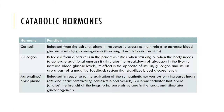Some of the catabolic hormones are shown here: cortisol, glucagon, adrenaline, and epinephrine. Cortisol is released from the adrenal gland mostly in times of stress, and its main role is to increase blood glucose levels by breaking down fats and proteins. Glucagon is released from the alpha cells in the pancreas when the body needs to generate additional energy, and it stimulates the breakdown of glycogen in the liver to increase blood glucose levels.